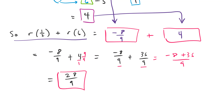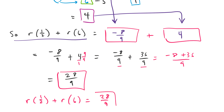So there we have it. Negative 8 plus 36 over 9 gives us 28 over 9, which is our final answer. R of 1 half plus r of 6 is 28 over 9. If you have any questions, let me know. Thanks.